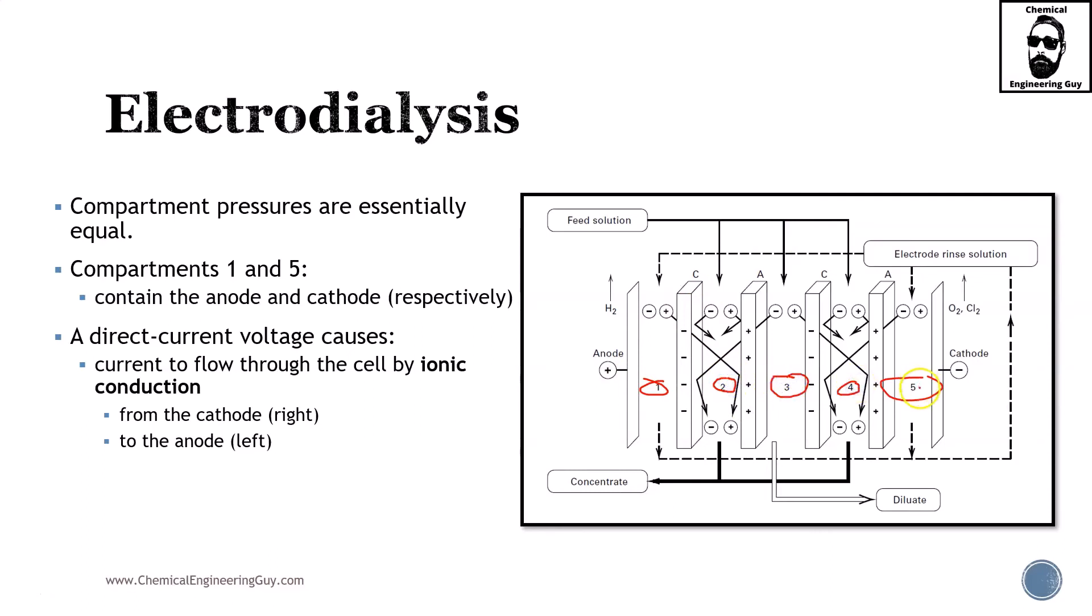The addition of direct current voltage will cause the electrons to flow through all the cells. It starts from the negative point and ends up in the positive point. So remember, negative to positive.